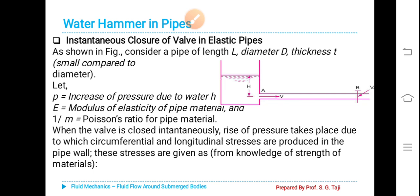Let p be the increase of pressure due to water hammer, E is modulus of elasticity of pipe material, and 1 upon m is Poisson's ratio for the pipe material. When the valve is closed instantaneously, rise of pressure takes place due to which circumferential and longitudinal stresses are produced in the pipe wall. These stresses are given from knowledge of strength of materials.